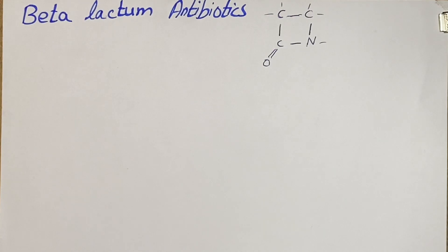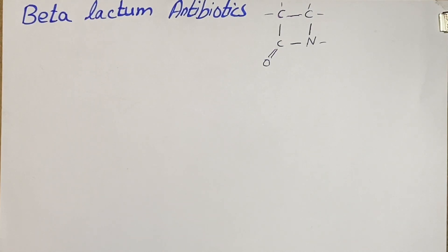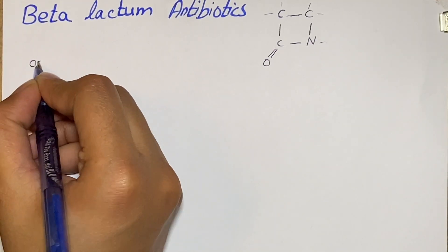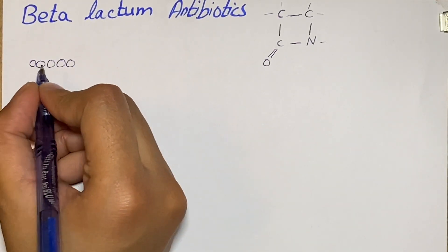This ring has four atoms in it, out of which three atoms are of carbon and one atom is of nitrogen. One carbon atom is attached with oxygen through a double bond. These antibiotics include penicillin and its derivatives, for example carbapenems, cephalosporins, and monobactam antibiotics — all of these are beta-lactam antibiotics.